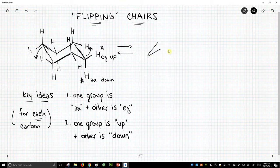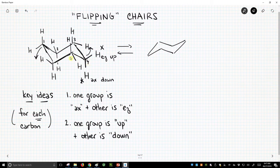So here is what our new chair is going to look like. So let's number our carbons. It's always a good idea. One, two, three, four, five, and six. And so this is one, two, three, four, five, and six.